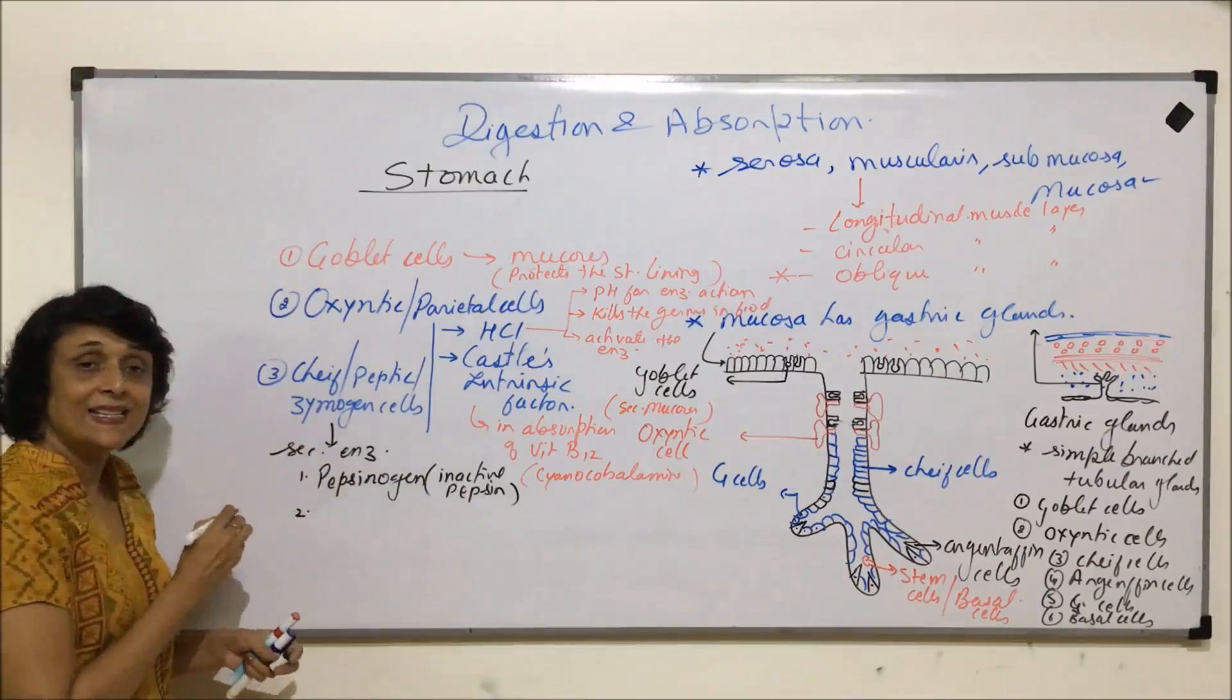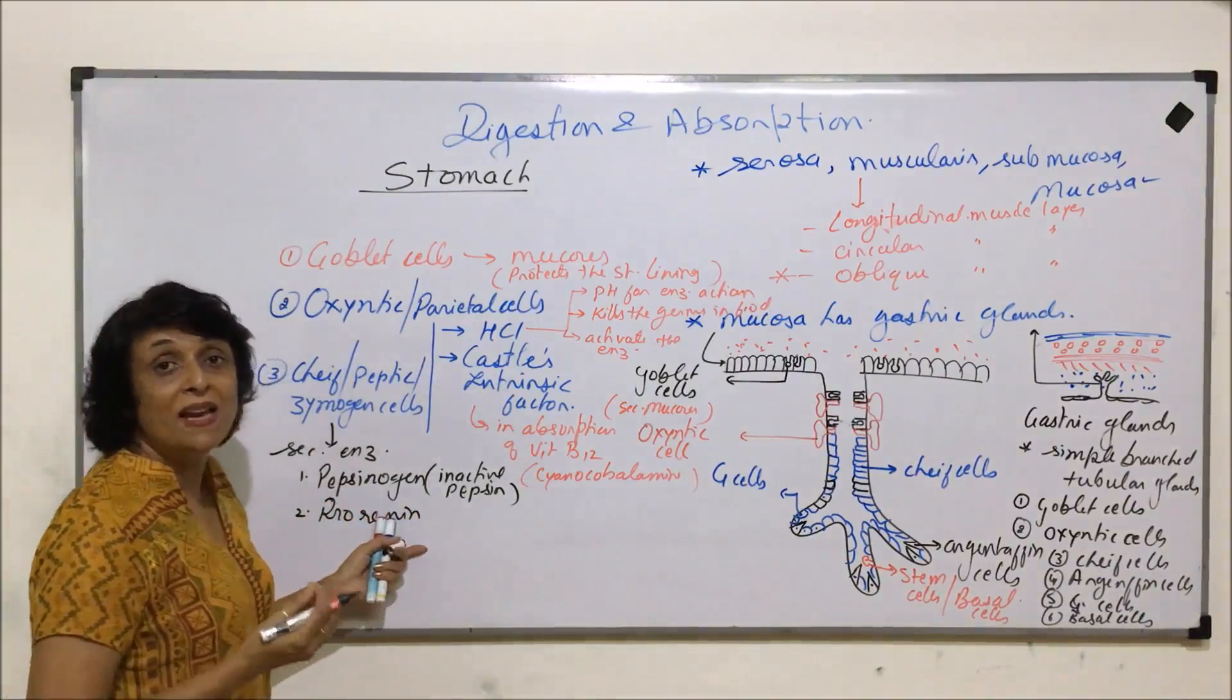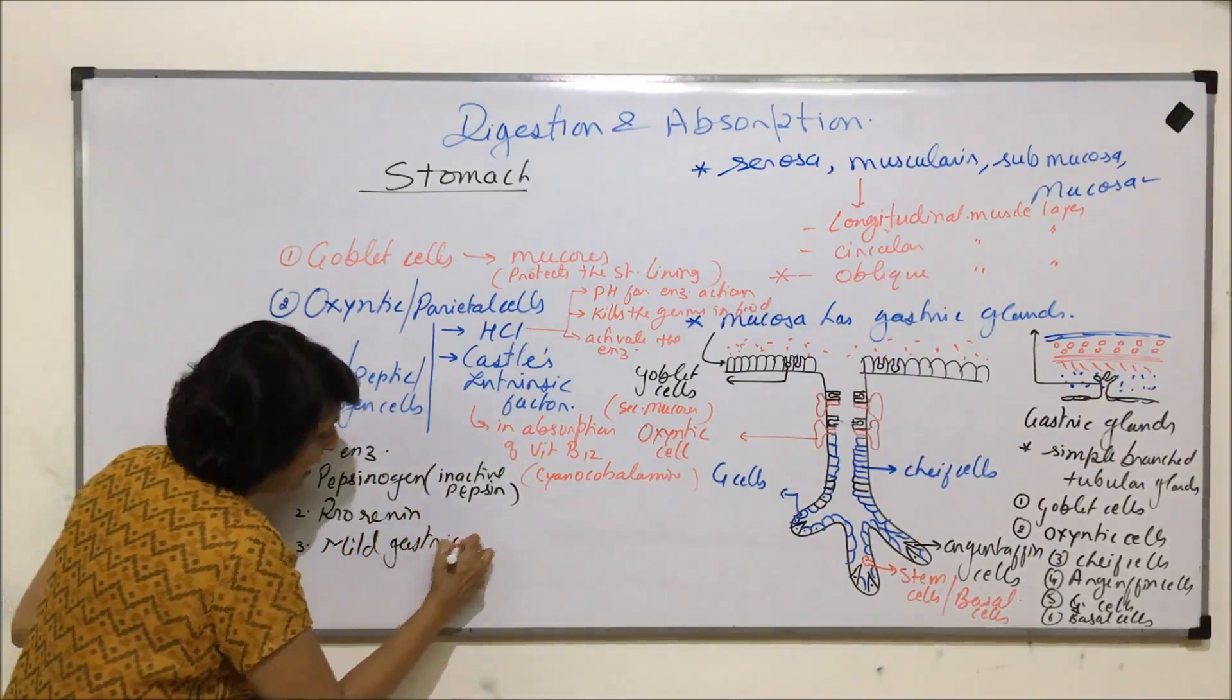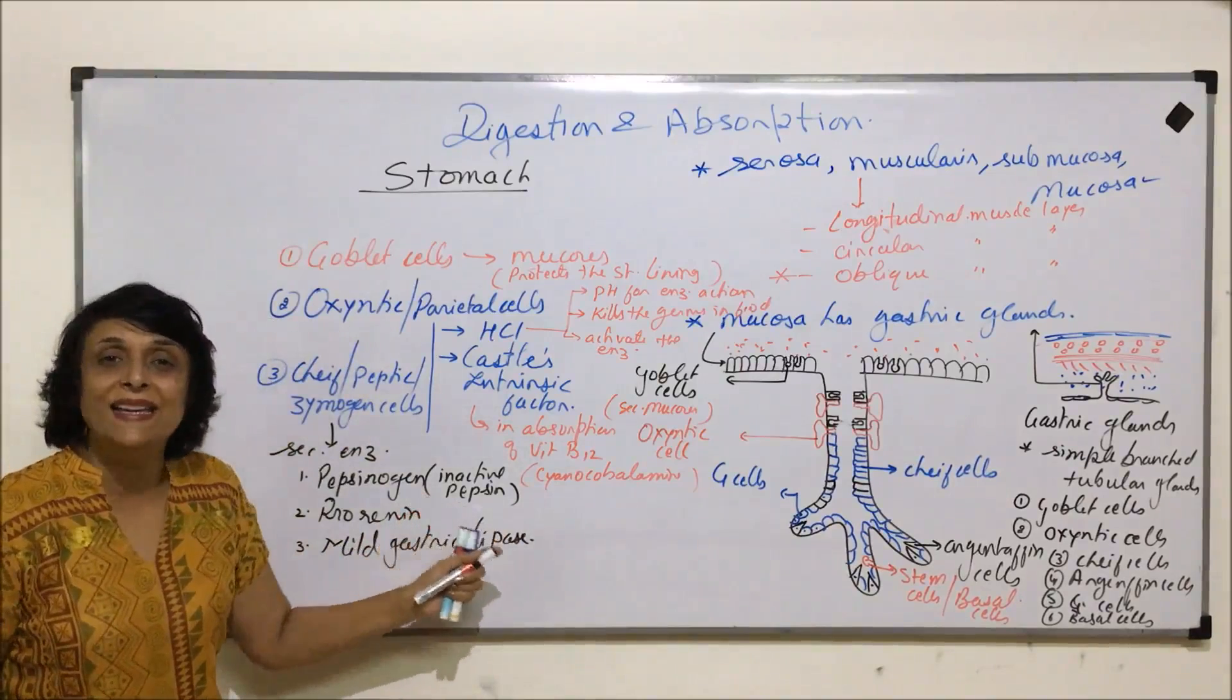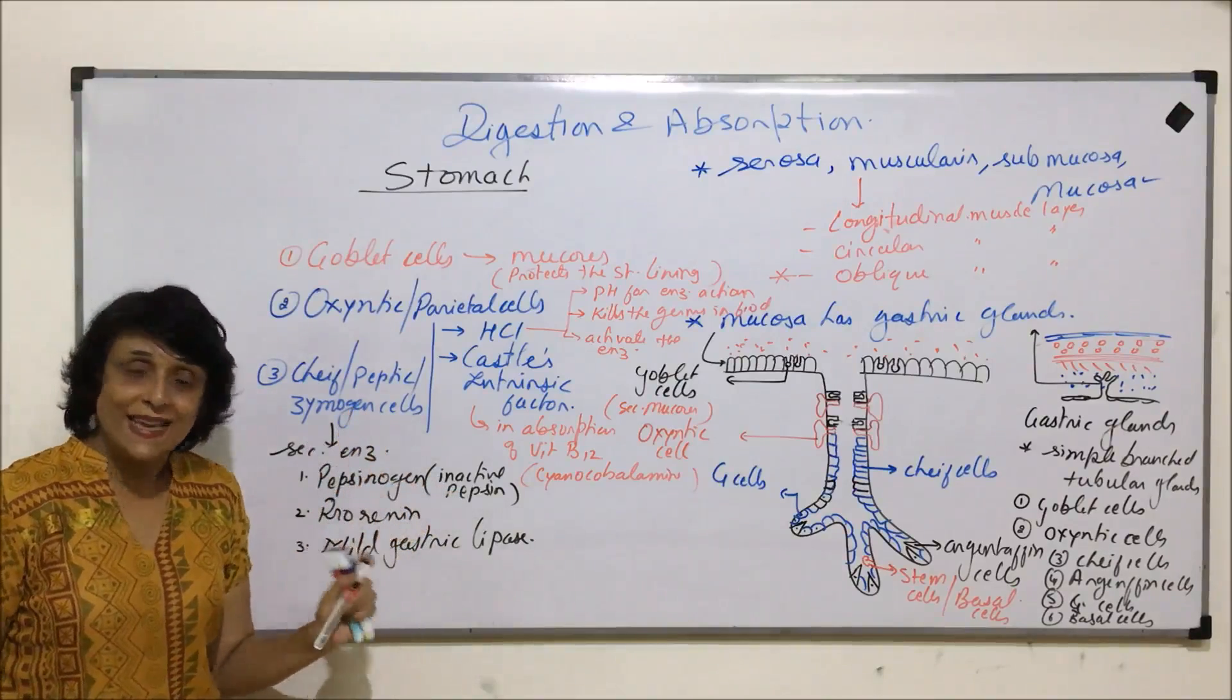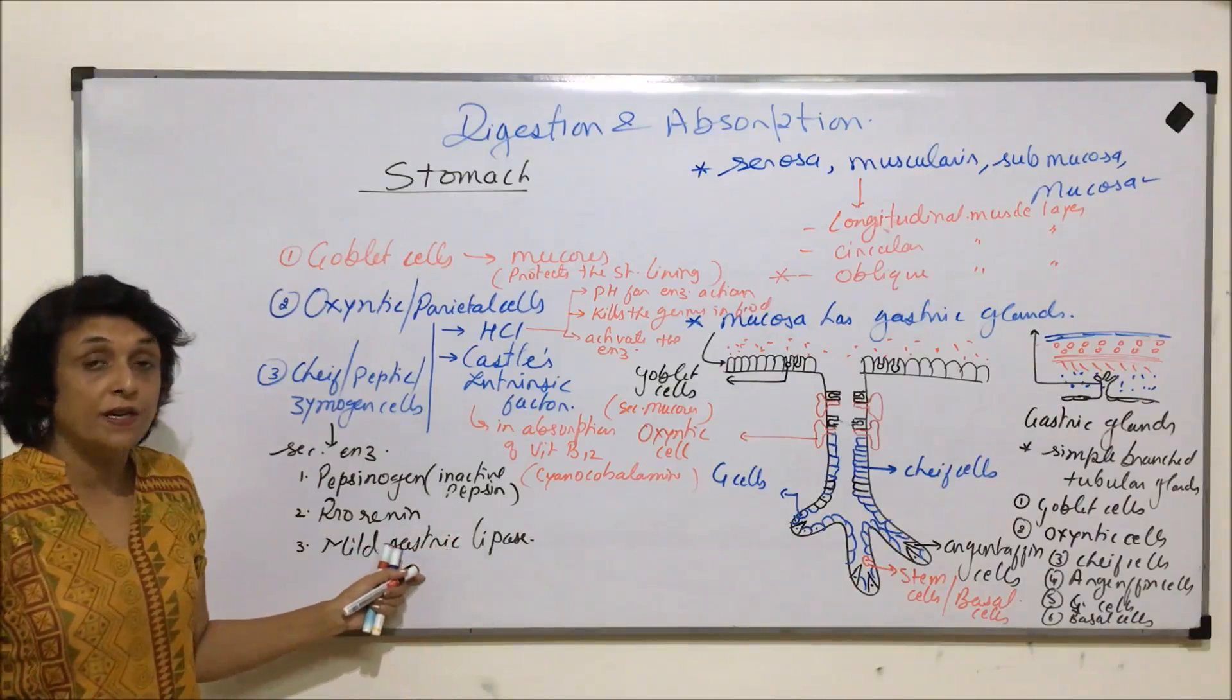The second enzyme is pro-renin. This is inactive renin which acts on the milk protein. And third, there is a mild gastric lipase. Pepsin acts on all proteins and digests it. Renin acts on the milk protein that is casein. And mild lipase, its action is negligible. It is a strong enzyme but it is not getting the proper conditions to work here. That is why we call it a mild enzyme.